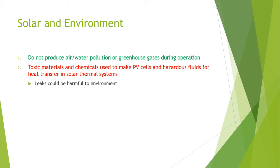One of the most toxic chemicals created as a byproduct of the process used to create a solar panel is silicon tetrachloride. When silicon tetrachloride is exposed to water or moisture, it releases hydrochloric acid (HCl).